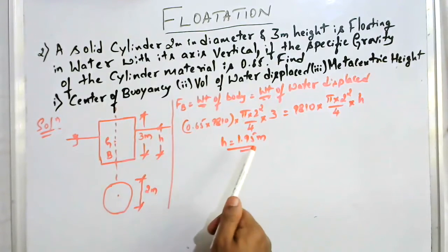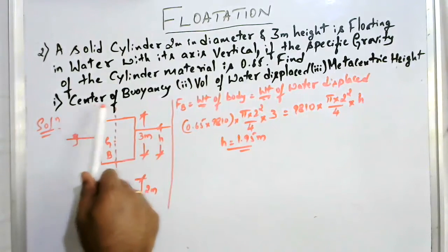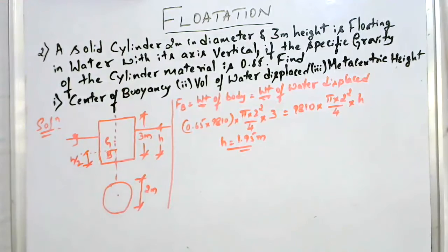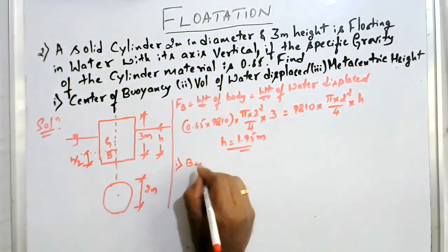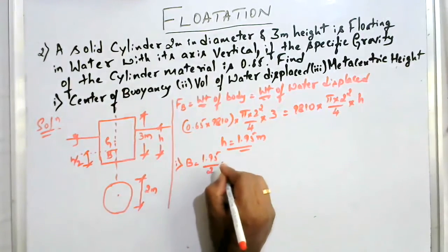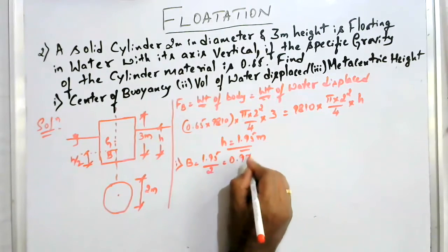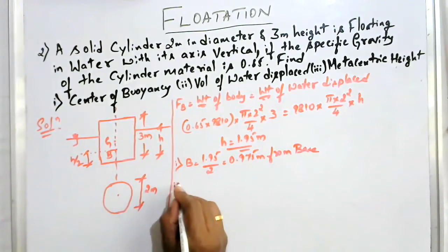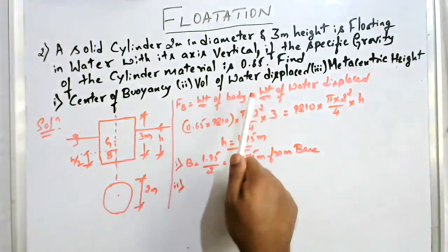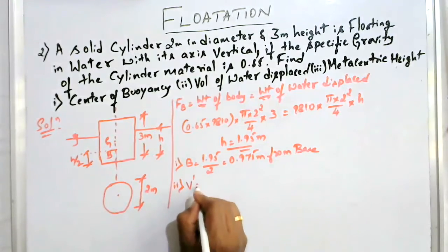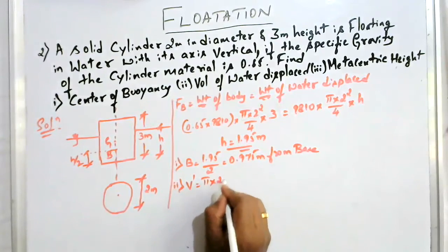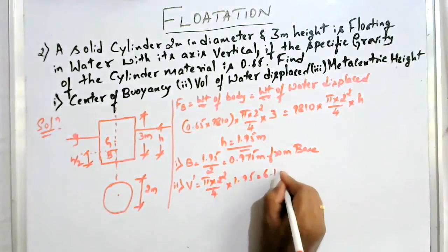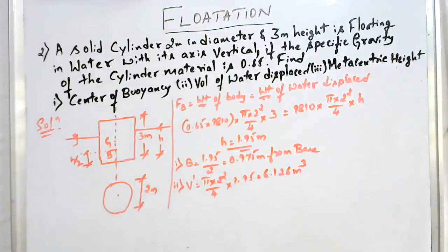The depth of immersion is 1.95 meter. The center of buoyancy B is at a distance of h by 2 from the base, therefore center of buoyancy equals 1.95 by 2, which is 0.975 meter from the base. Volume of water displaced equals volume of the immersed part, V-dash, which is pi × 2² / 4 × h, that is 1.95. This works out to be 6.126 cubic meters.